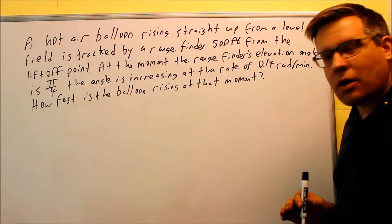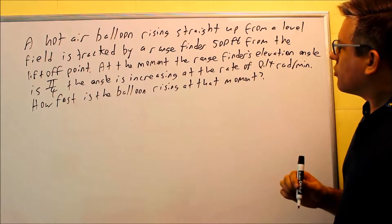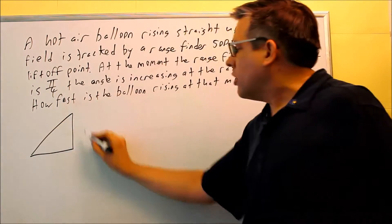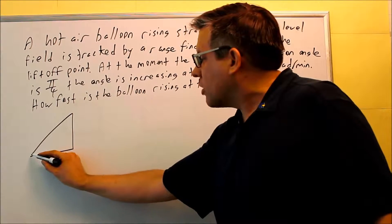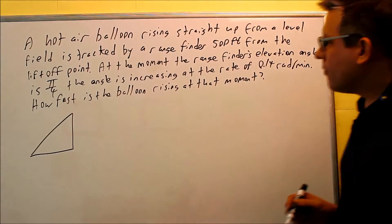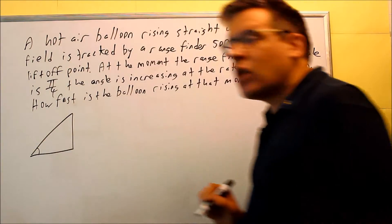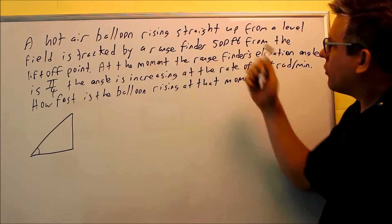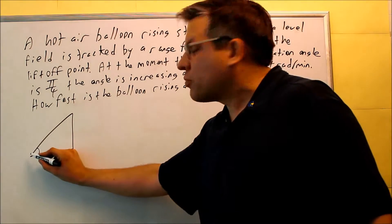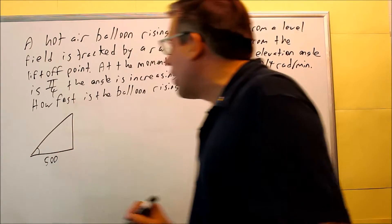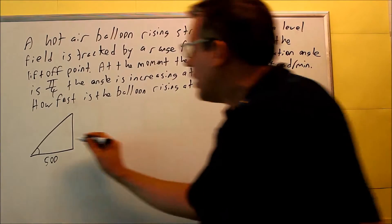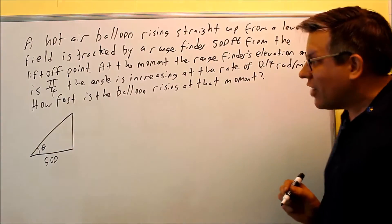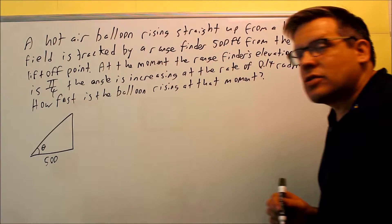Let's stop right there and draw a picture of this. The balloon is rising straight up from a level field, and this is going to be the situation. The balloon is going to be right here, rising straight up. Over here you've got some range finder that is tracking that. We're talking about an elevation angle. It's tracked by a range finder 500 feet from the lift-off point, so the lift-off point is right here, this person is 500 feet away, so put 500 over there. At that point we're going to have pi over 4, but for right now let's go ahead and label it as theta because we want to get some kind of trig function that relates to this information.